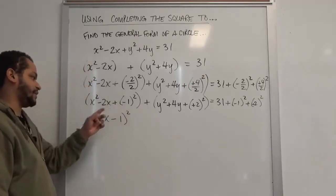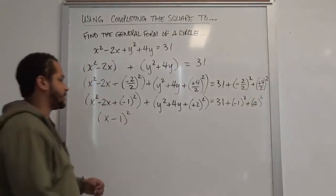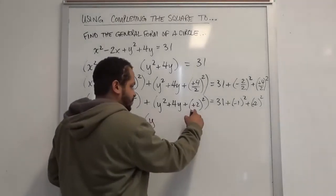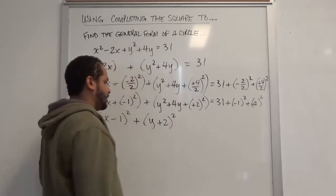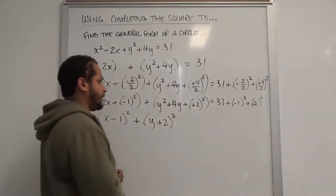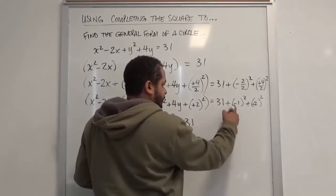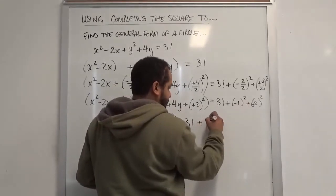That's the whole purpose of keeping the sign with this term, so that this becomes easier here. Then here we have, take this y, we take this plus 2, we completed the square here. Now the only thing left to do is evaluate this side. We have 31, negative 1 squared is just 1.